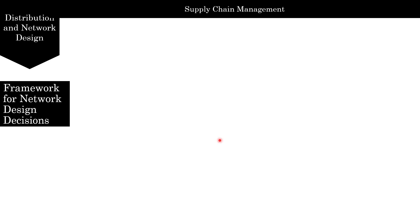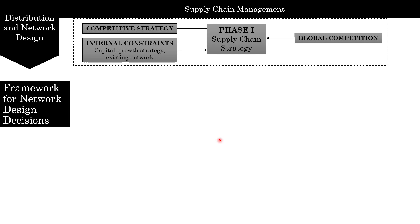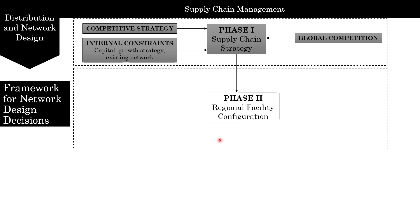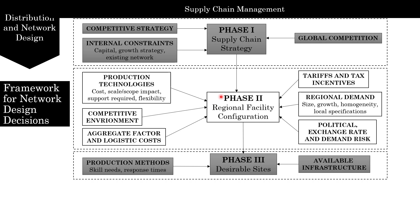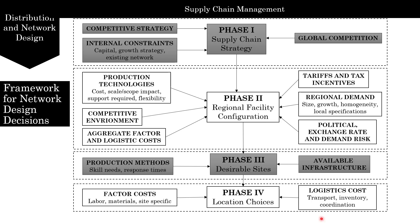Let's look at the framework for network design. Phase one is supply chain strategy, which includes competitive strategy, internal constraints such as capital and existing network, and the global competitive environment. This leads to phase two — regional facility configuration — which considers production technologies, cost and scale impact, competitive environment, aggregate factor and logistics costs, tariffs, incentives, regional demand, and political and exchange rate risk. Phase three identifies desirable sites based on production methods, skill needs, response time, and available infrastructure. Phase four evaluates location costs including logistics costs and factor costs.